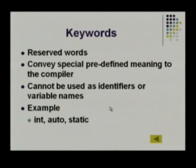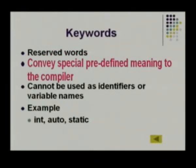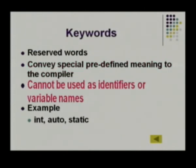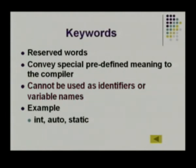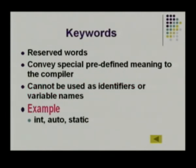First, we will start with keywords. Keywords are reserved words which have a special or predefined meaning that cannot be altered. They cannot be used as identifiers, variable names, or constant names — they must be used only for the purpose for which they are defined. Examples include: int, auto, static, float, double, switch, if, for — all of these are keywords with predefined meanings.